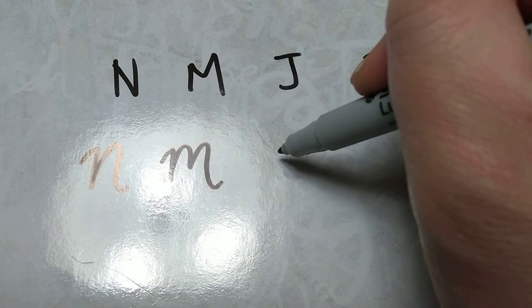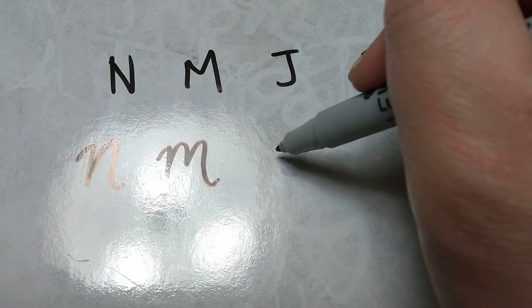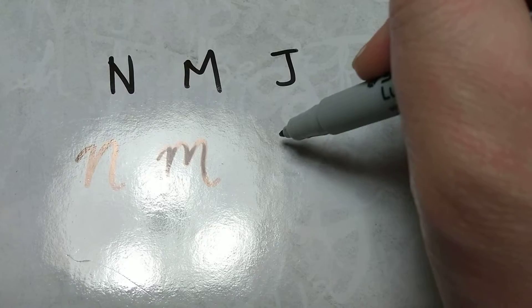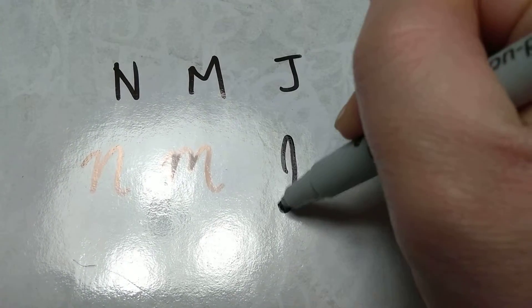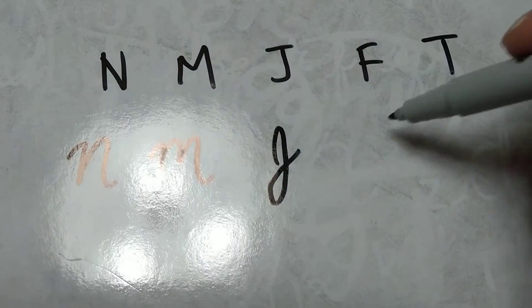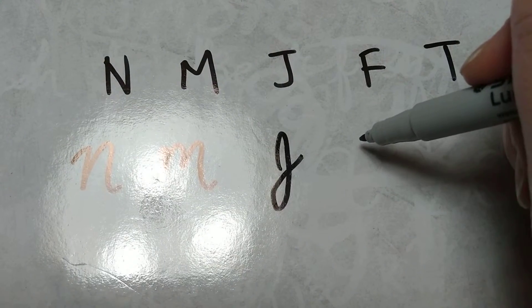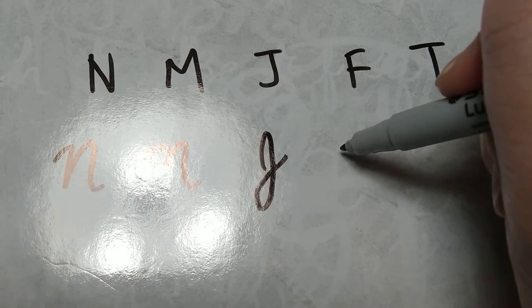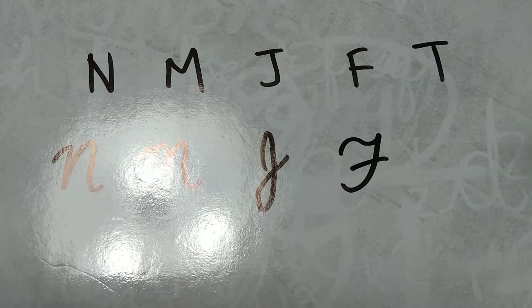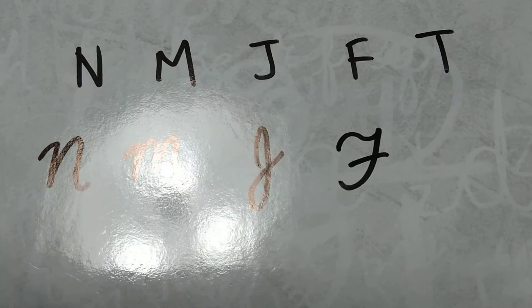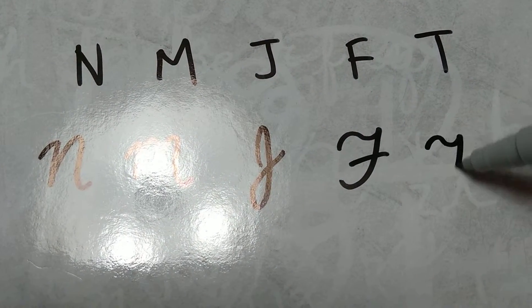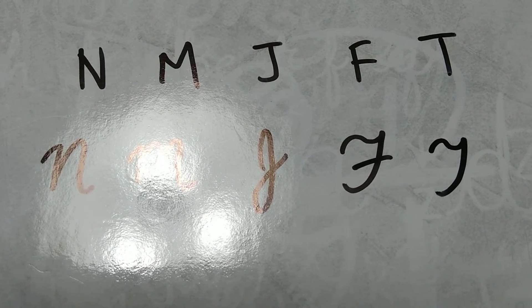The letter J looks like this. The letter F looks like that. The letter T looks very similar to F but you don't cross a line through.